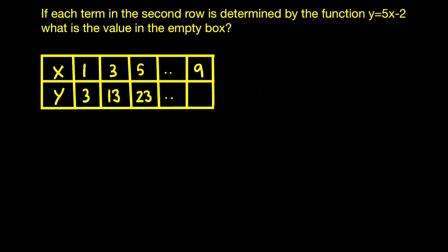If each term in the second row is determined by the function y is equal to 5x minus 2, what is the value in the empty box?